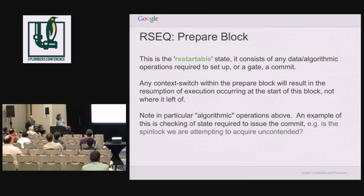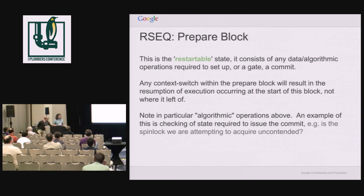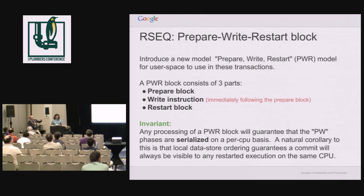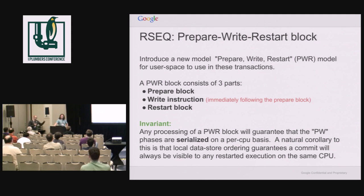For the restartable version, what we do is note on context switch that user space was in one of these blocks, and we tell it to go back to the restart and redo any of the preparation. So if you look at the user space code, there end up being three blocks of code: the prepare, the write, and the restart. We guarantee that if you are interrupted between prepare or write, when your execution resumes, your instruction pointer is moved to the restart. The restart can figure out where you were and then prepare or write to reconstruct it. The thread is still scheduled regularly — we just move the IP when it comes back in.